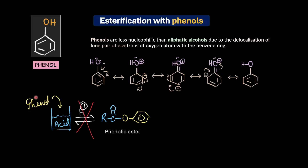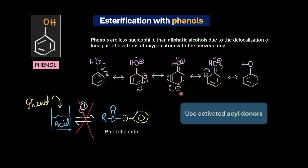Since phenol is less reactive, we have to compensate for this decrease in reactivity by using a stronger acid derivative. In other words, we need to employ activated acyl donors — compounds where the acyl group is already highly electrophilic and have a good leaving group. That makes them much more reactive even towards weak nucleophiles like phenols. We are talking about acid chlorides and acid anhydrides — these are the activated acyl donors.